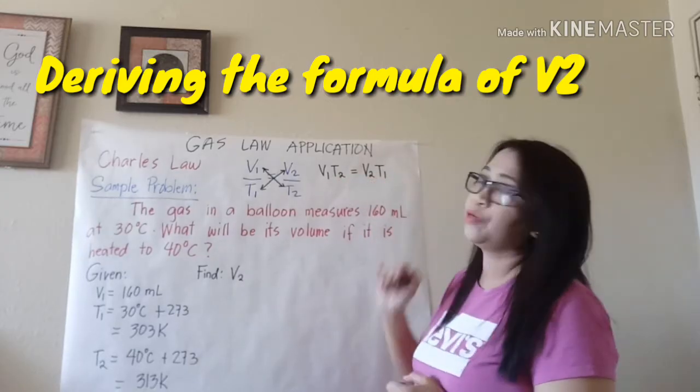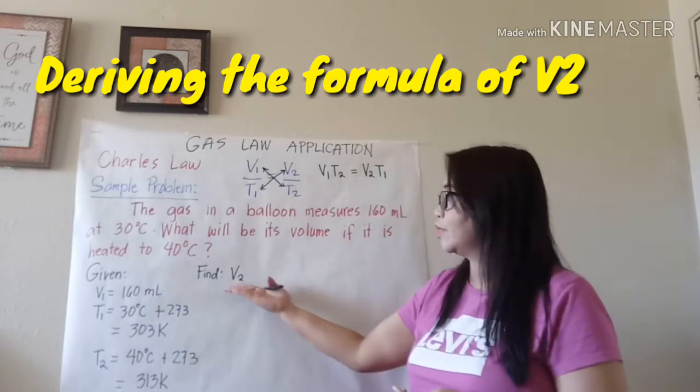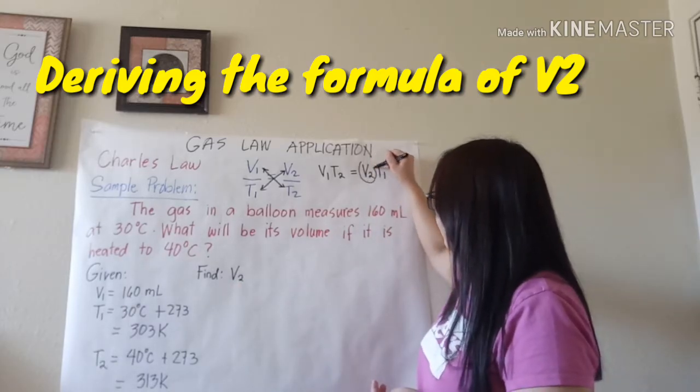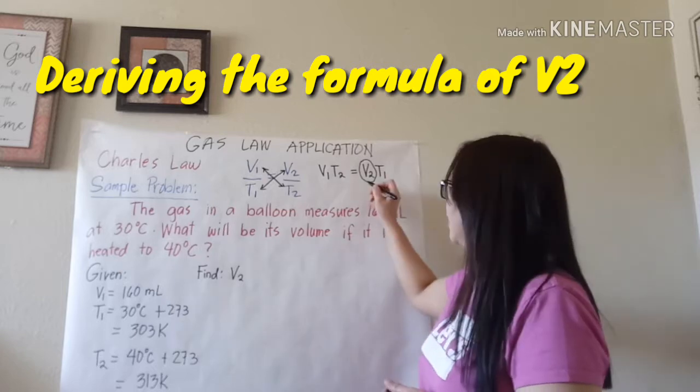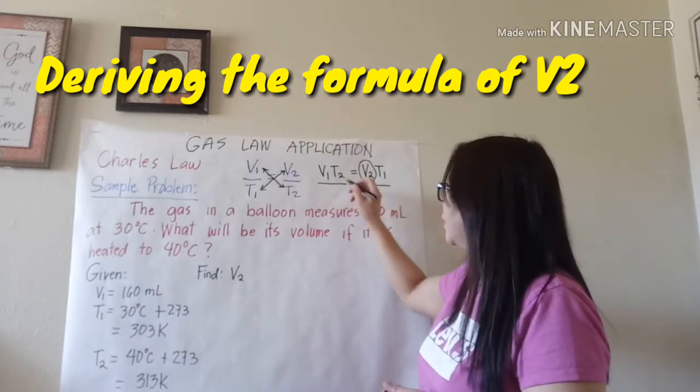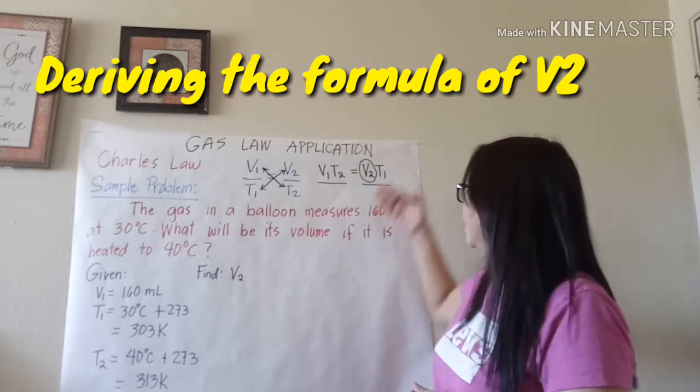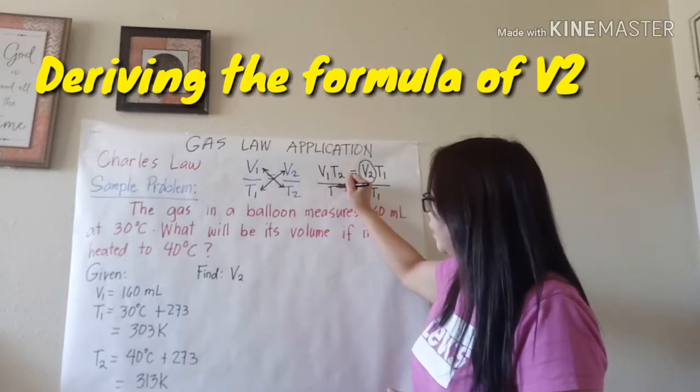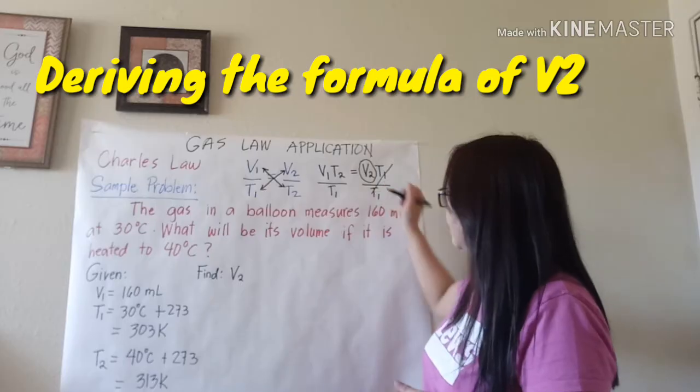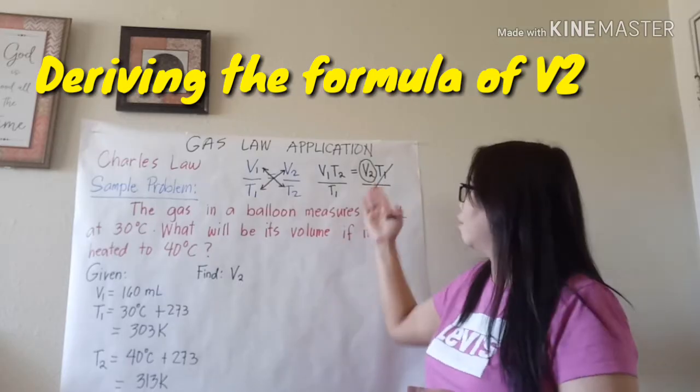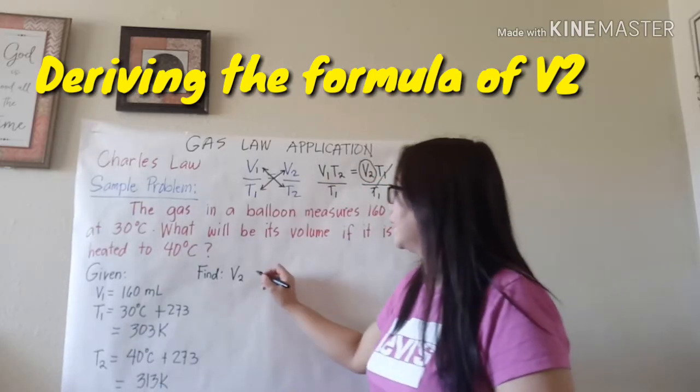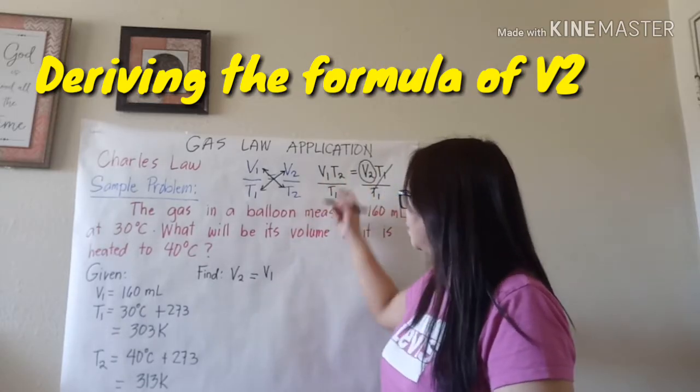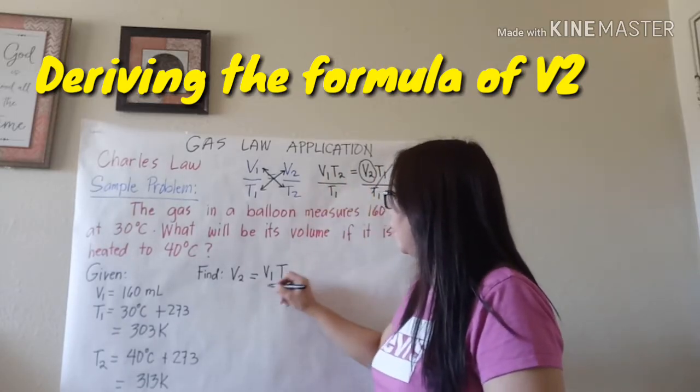But the unknown is V2, so we're going to encircle V2 here so you will not forget that it's the unknown variable. And we're going to divide both sides of the equation by T1, so write T1 here and T1 here and cancel out this variable.